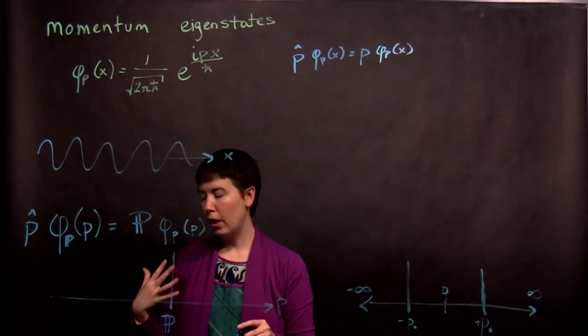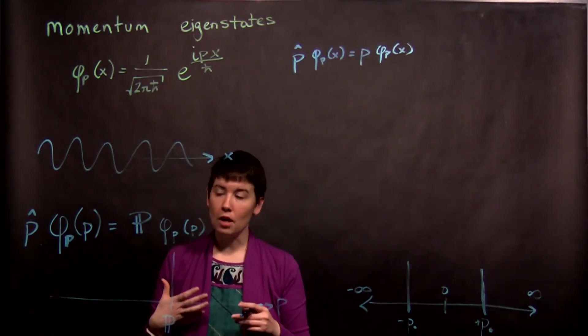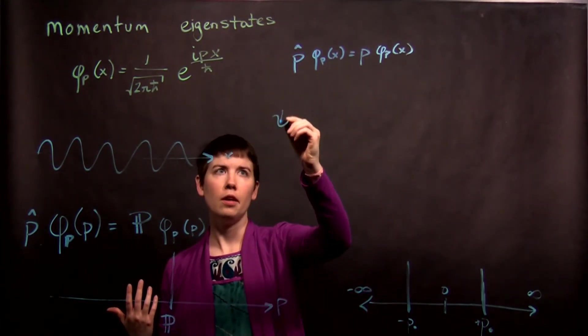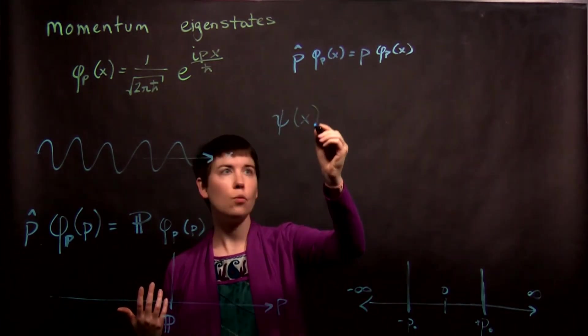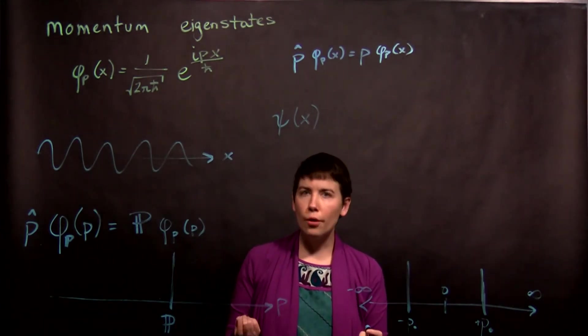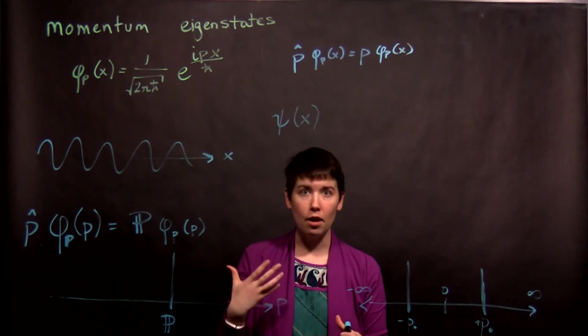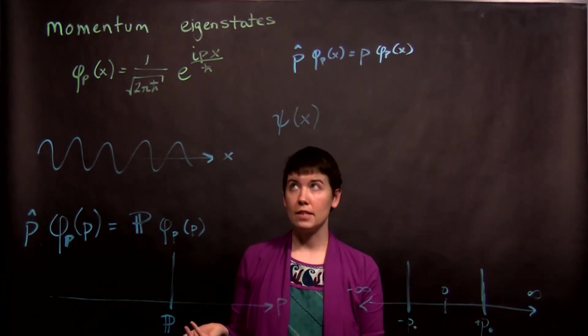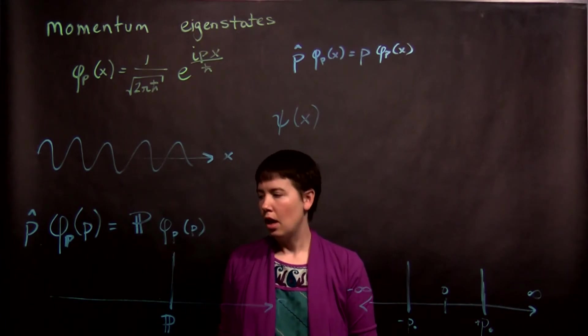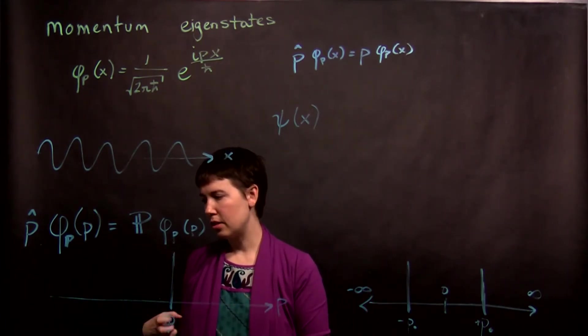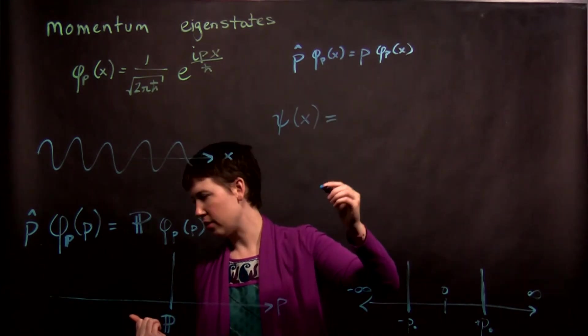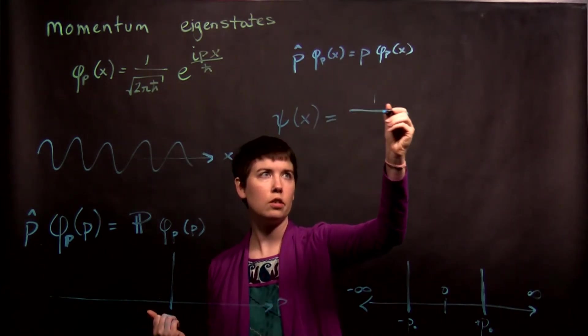So where we're going to go with this is that we can build up now our wave function. And so if I have any wave function I want as a function of position, we know that we could basically build that up as a sum of our eigenstates. And now we have our momentum eigenstates. But we actually can basically do a Fourier transform. And I'm looking in my notes to make sure I get the normalization right because the normalizations start getting weird.